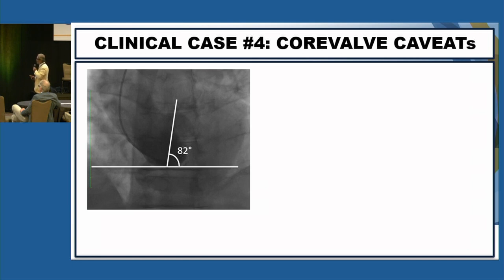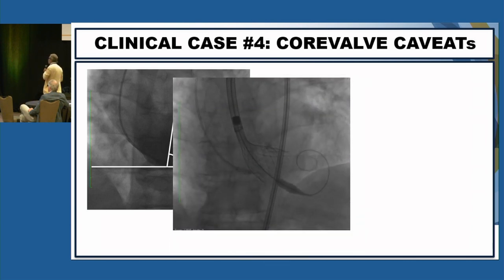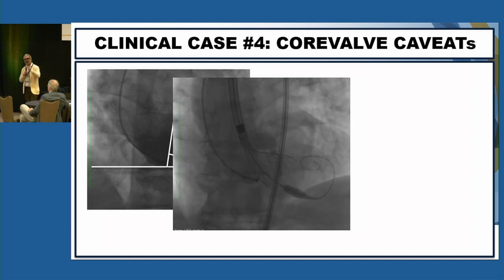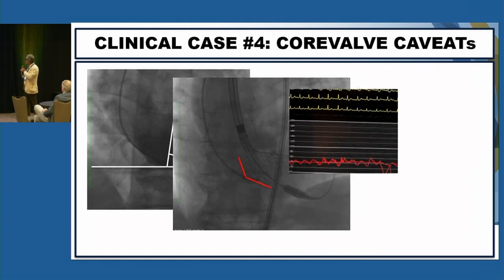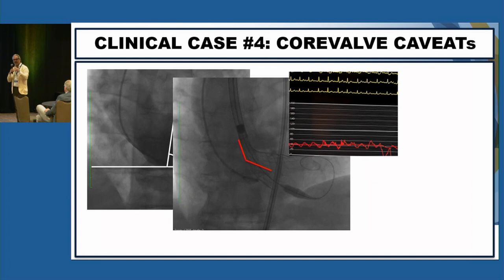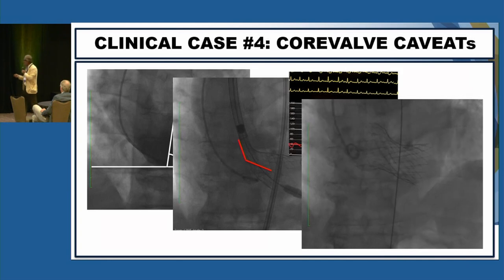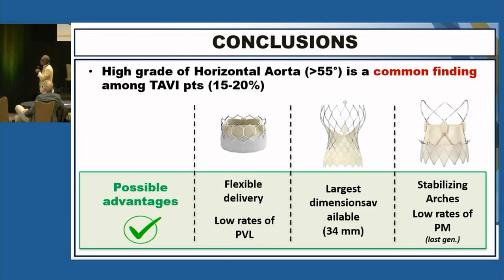With extreme horizontal aorta — angles of 80, 82, or more than 70 degrees — you may face a situation where you deliver the valve and it's almost delivered, but the pressure is damped. This relates to the fact that when you create kinking of the valve, you don't have room to permit the leaflets to work. You only have two options: first, pull the valve to straighten it and permit the leaflets to start working; or, even better, deliver the valve very promptly at this stage — otherwise the patient will go into cardiogenic shock. This is the final result.